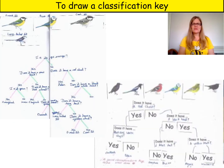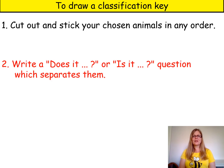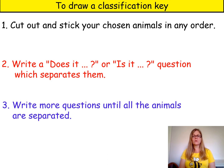Here are some great examples of bird classification keys that Year 5 children did on RSPB Bird Day last year. Let's check what you need to do if you want to make a classification key. First, cut out and stick your chosen animals in any order. Next, write a 'does it' or 'is it' question which separates them. Then write more questions until all the animals are separated. Finally, write their names. You could also try to make a classification key with more than four animals if you want.